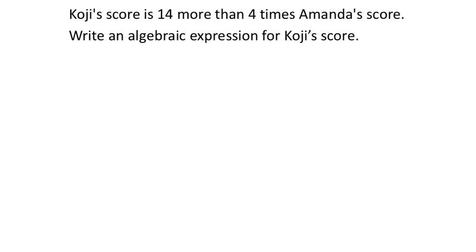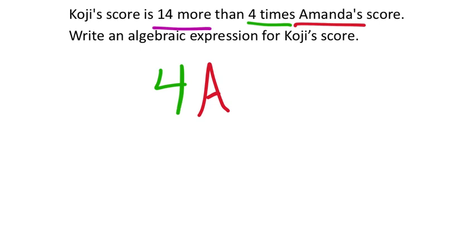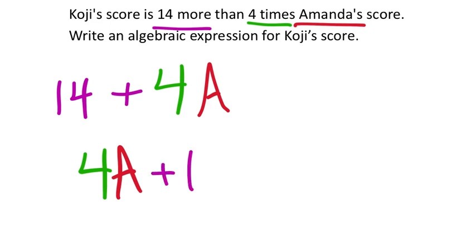Writing an algebraic expression: Koji's score is 14 more than 4 times Amanda's score. Using A for Amanda's score, the expression is 4A + 14 (or equivalently 14 + 4A). Either form works unless the assignment specifies a particular order. As an equation, you'd set this equal to K for Koji.